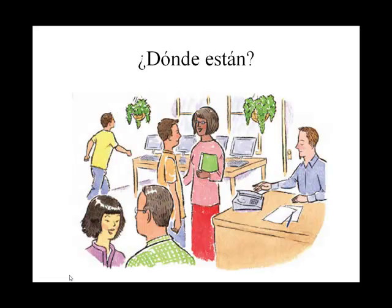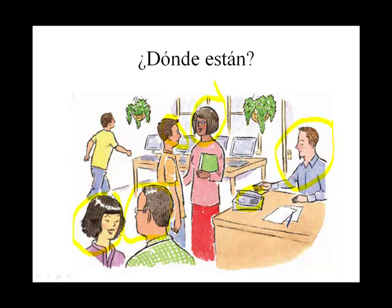¿Dónde están estas personas? Están en la oficina de los consejeros. ¿Y qué está en esta oficina? Bueno, aquí está un teléfono. Está un secretario. Aquí está una consejera. Aquí está un consejero. Aquí está un estudiante. Aquí está una estudiante. Aquí están una y dos plantas. Aquí están cuatro computadoras. What else can you see?